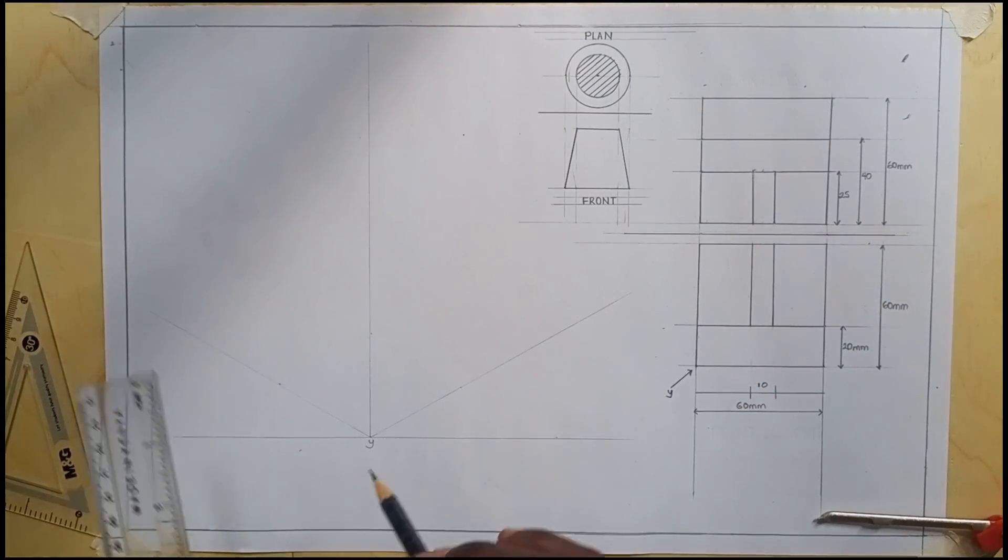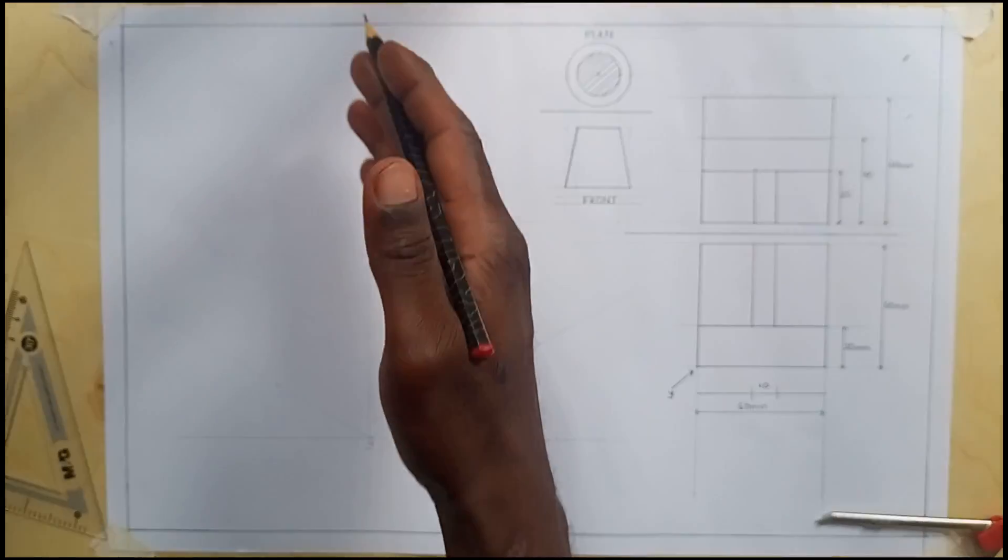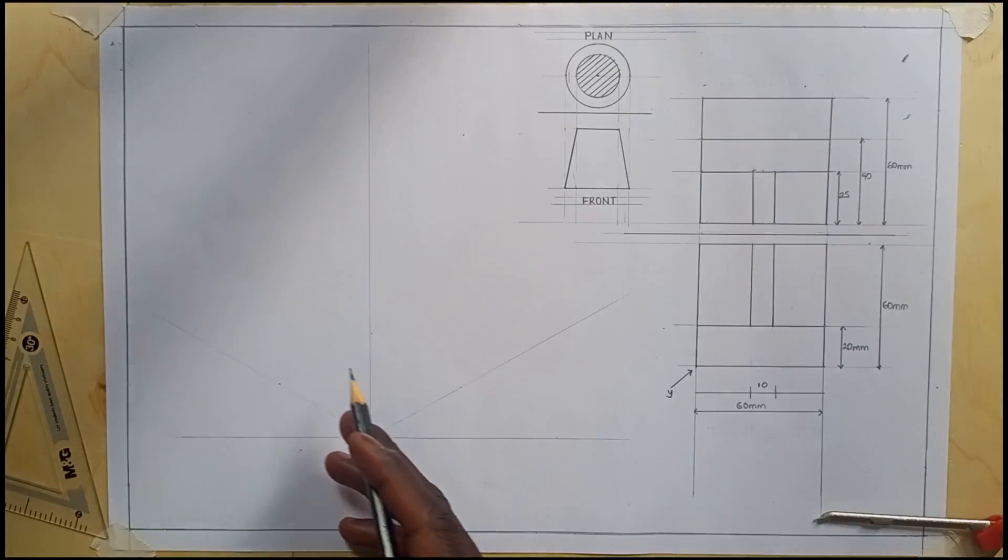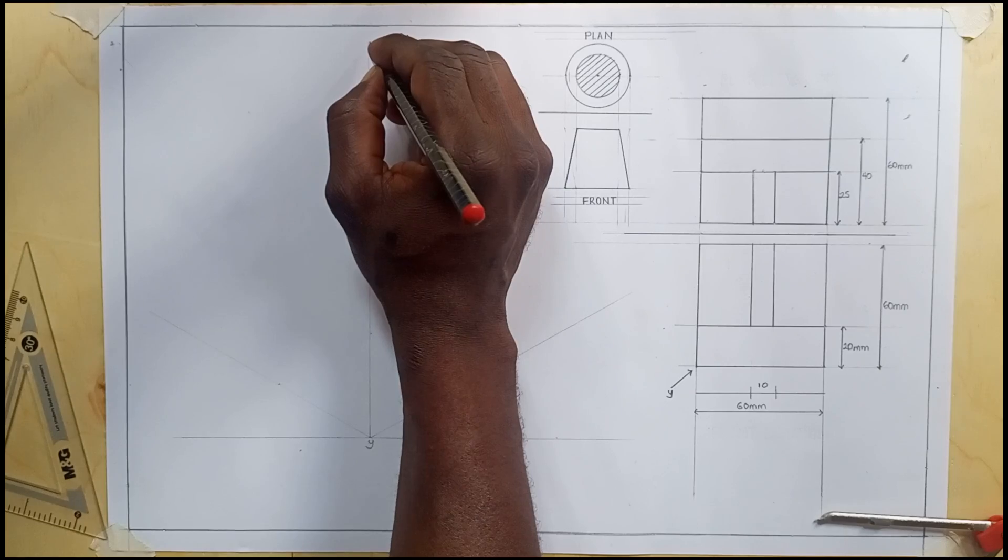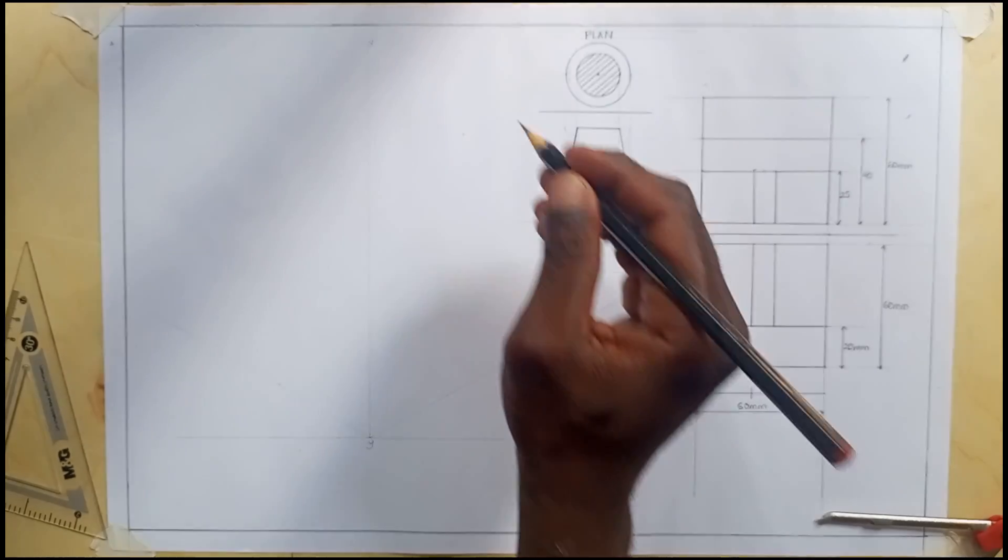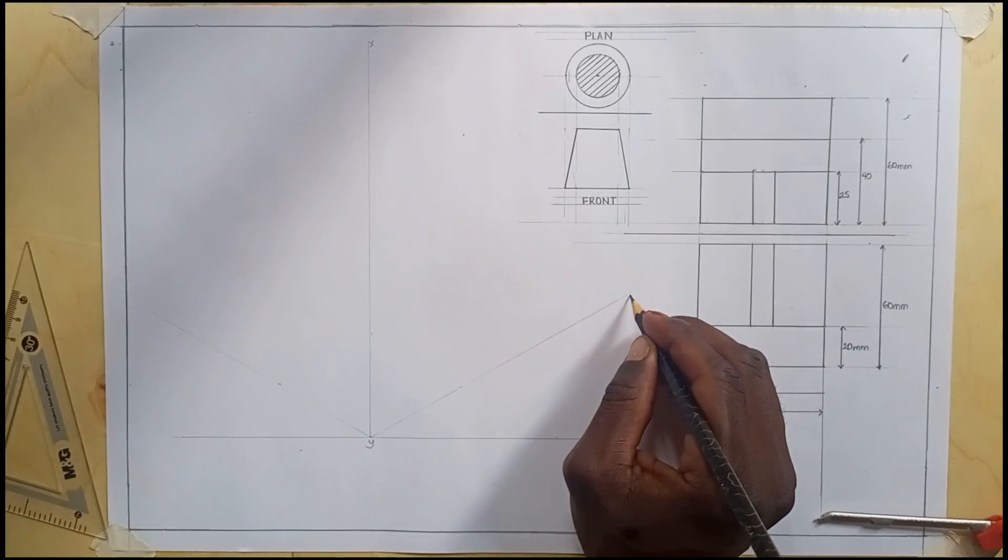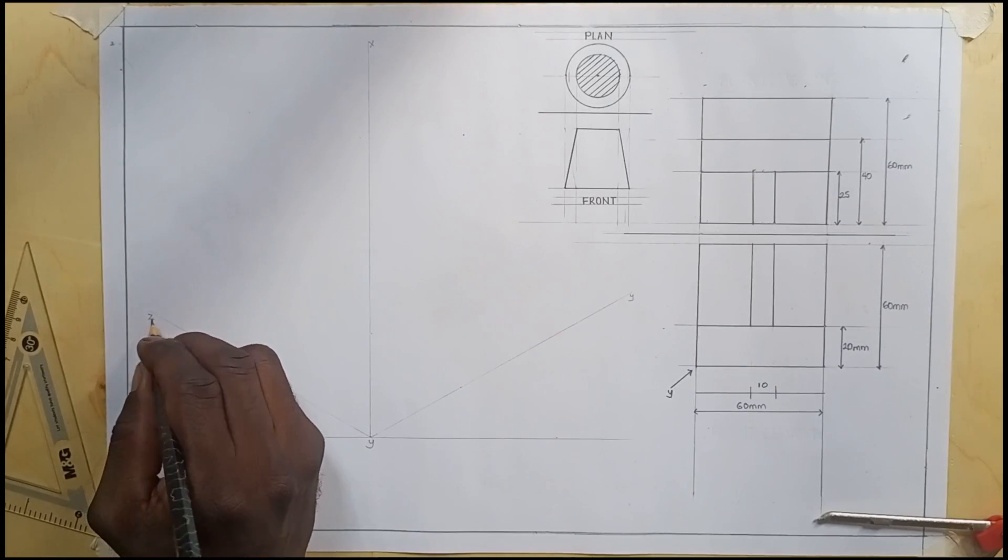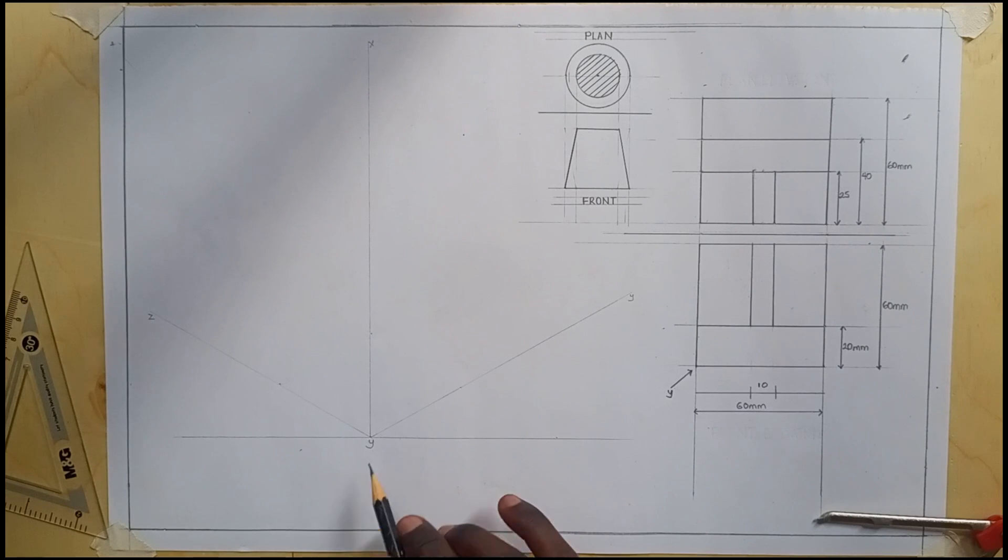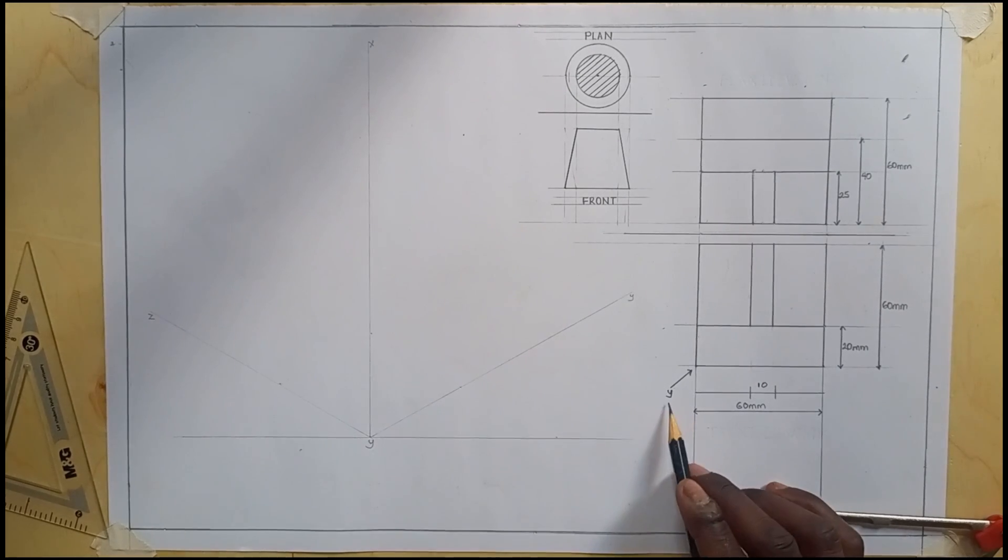I will join these points using my ruler. Now we have these axes, we call them isometric axes, whereby we shall call this the X axis, we shall call this the Y and the Z axis.